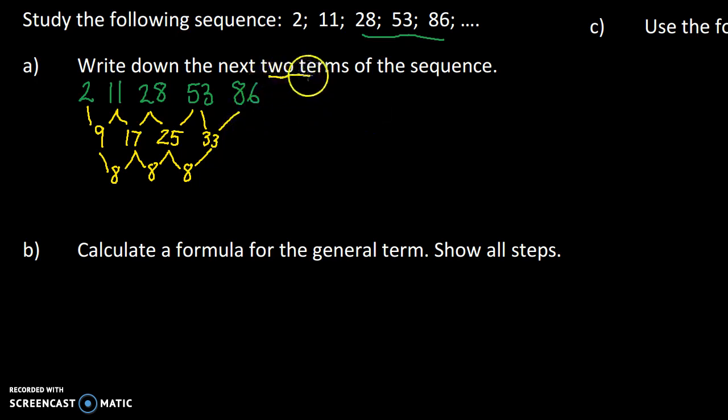So if we want to write down the next two terms of the sequence, we're going to have to figure out what we're adding next. That's going to be 41. Let's add 8 to 41 and that takes us to 49. So 86 plus 41 gives us 127 and 127 plus 49 is going to be 176. So those are the next two terms in the sequence.